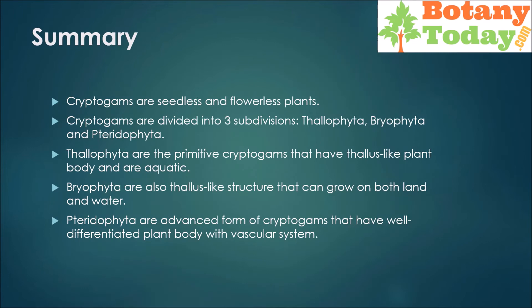In summary: cryptogames are seedless and flowerless plants, divided into three subdivisions — thalophyta, bryophyta, and pteridophyta. Thalophyta are primitive cryptogames with a thallus-like plant body and are aquatic. Bryophyta are also thallus-like and can grow on both land and water. Pteridophyta are the advanced form with a well-differentiated plant body and vascular system.